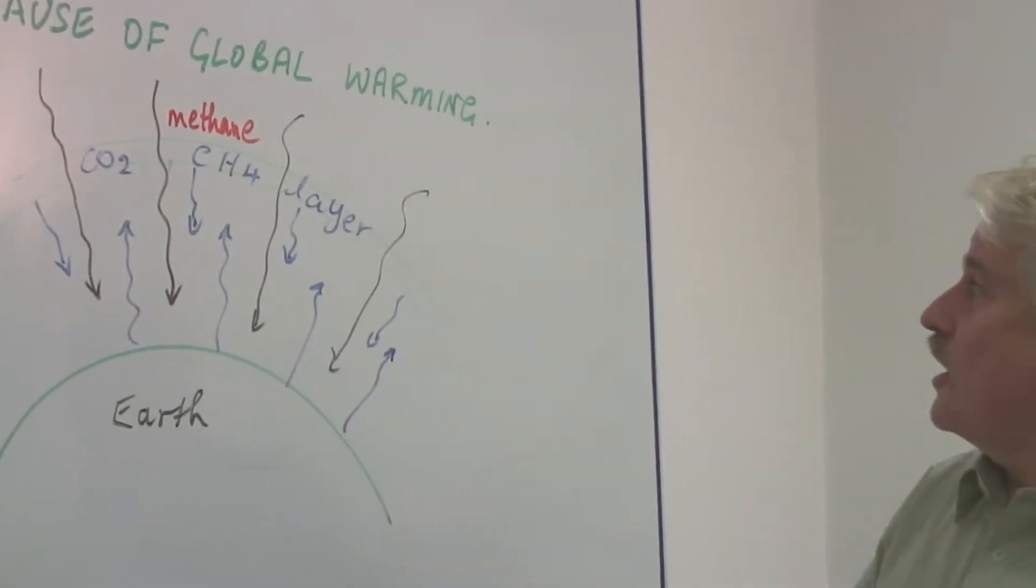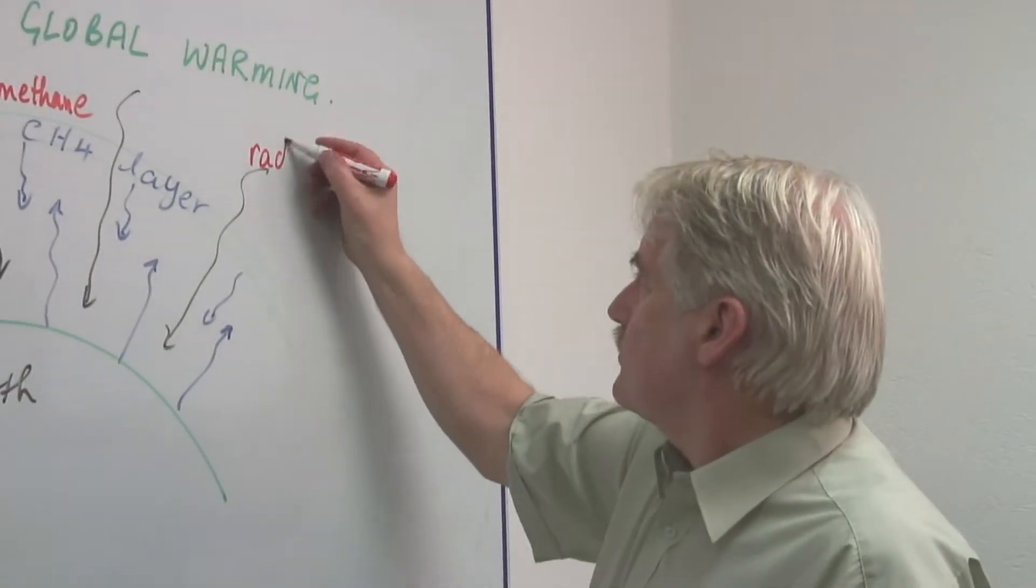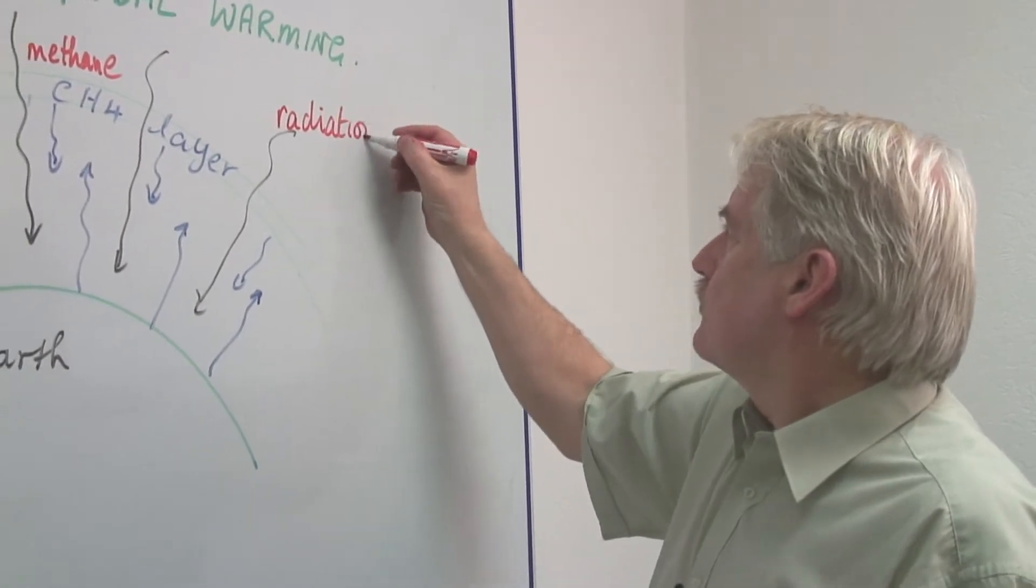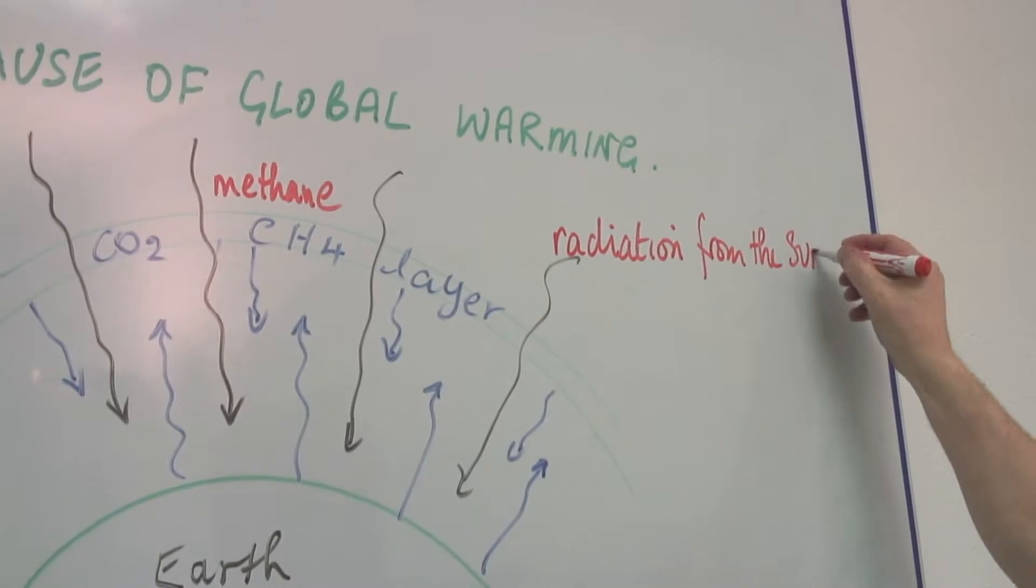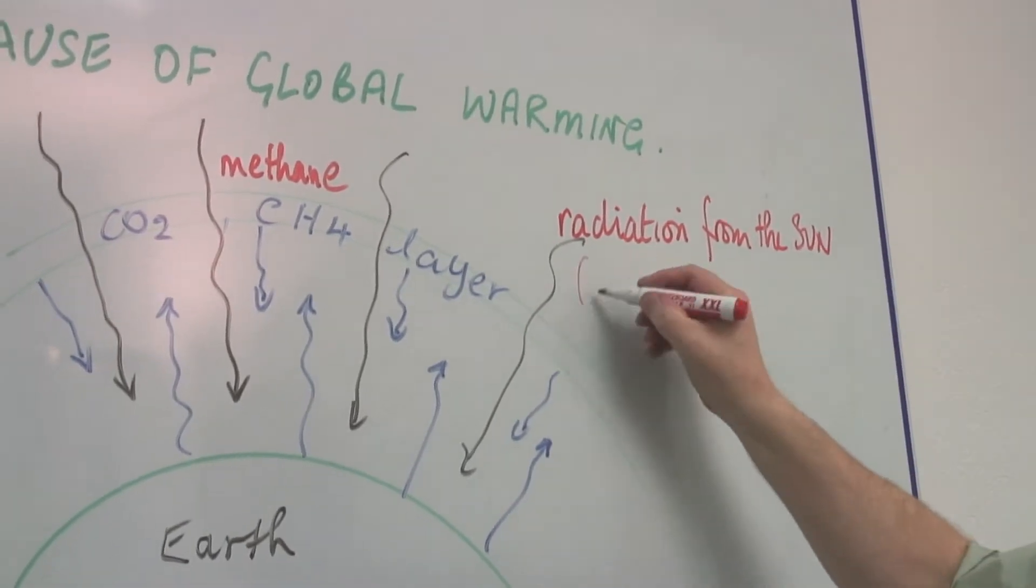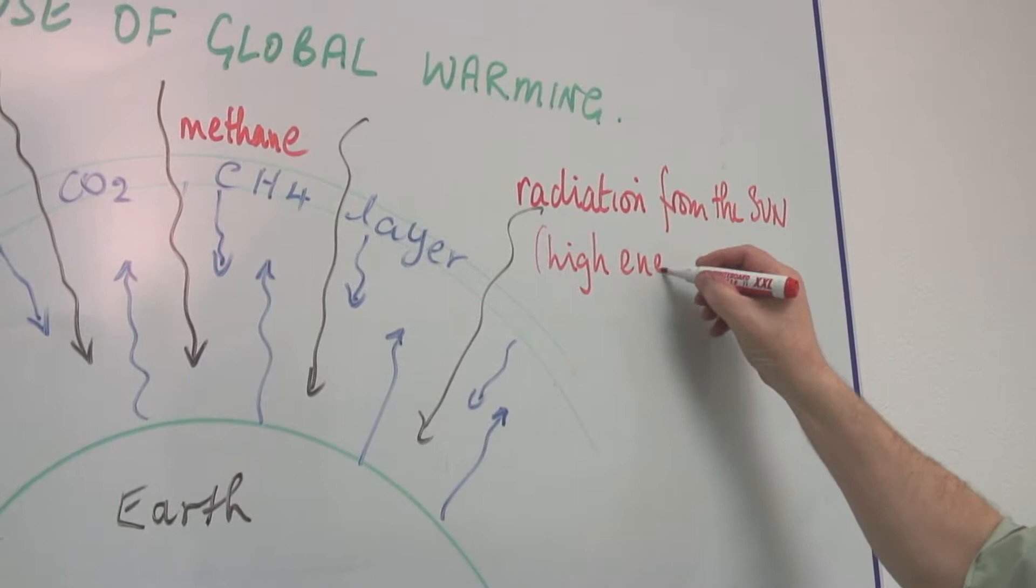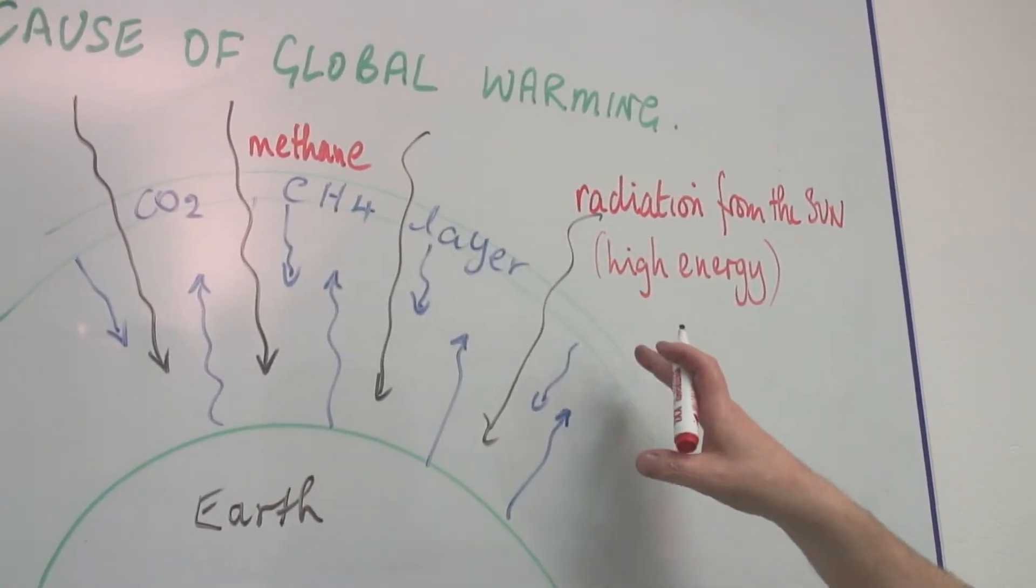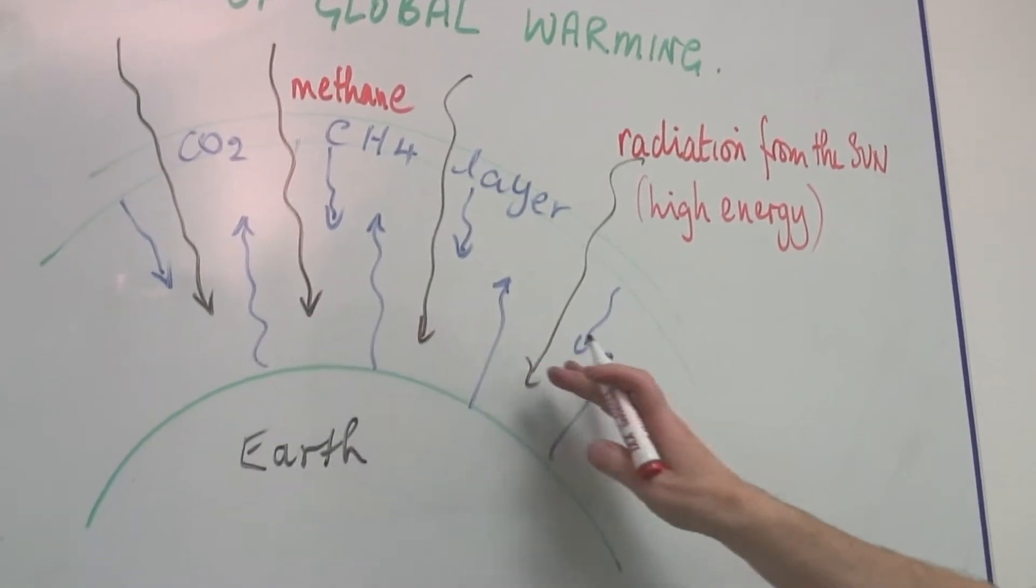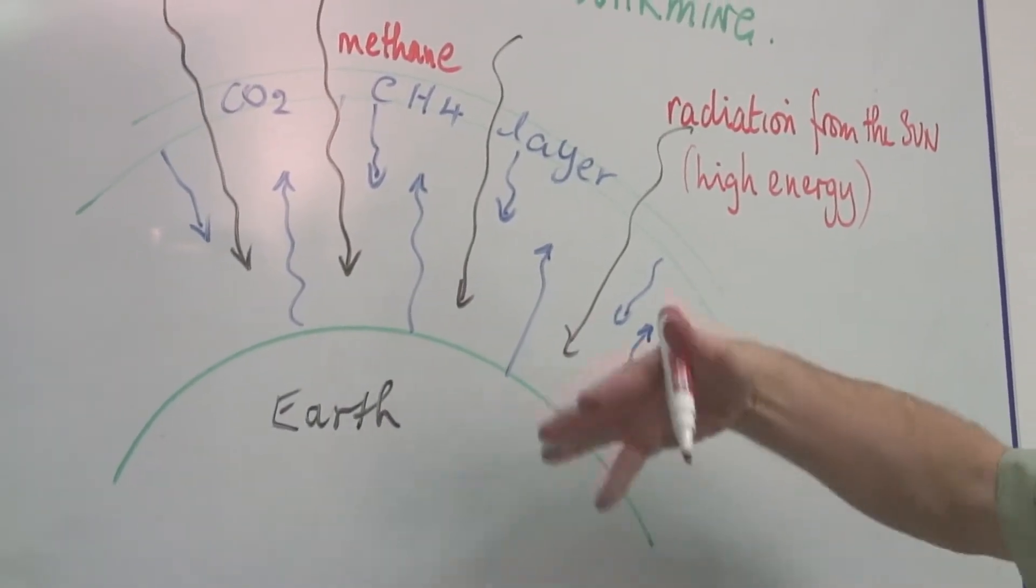So from the sun we get this radiation from the sun and this can be of all kinds but it tends to be high energy. And this is either absorbed in the atmosphere or it gets through to the surface of the earth, is absorbed and is re-emitted.